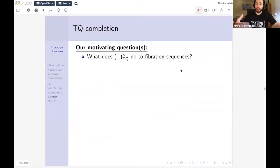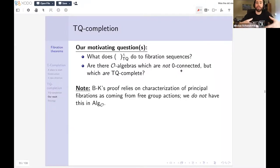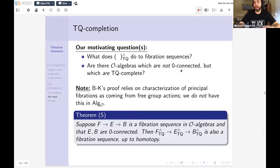So the motivating questions of this project is, well, okay, how does completion play with fiber sequences? Or even as a warmup, are there O-algebras that are not zero connected, so not covered by Ching-Harper, but which are nevertheless TQ complete? And it's worth noting Bousfield and Kahn's proof really relies on a characterization that's unique to spaces, that I have a free group action on the space, and that's something we don't have in our setting. So there is definitely, like, a new proof required. So we're still working on a complete answer, but this is the theorem that I wanted to talk about, which is that if you hand me a fiber sequence in O-algebras, where the total and base objects are zero connected, then after I hit it with completion, I still have a fiber sequence.